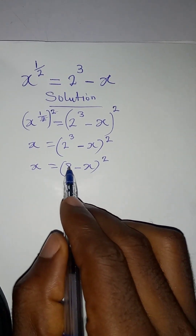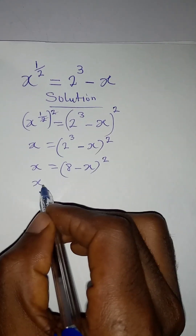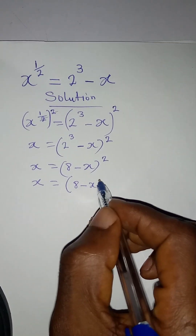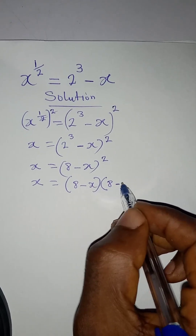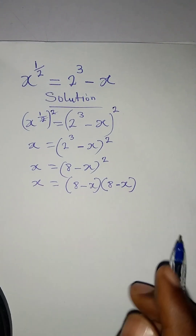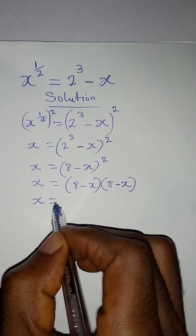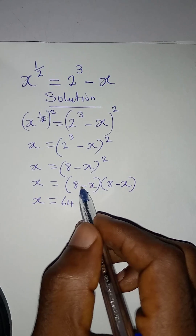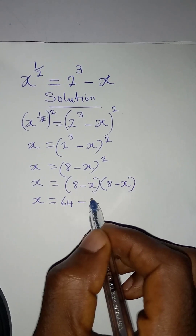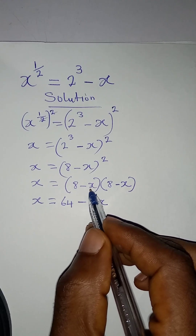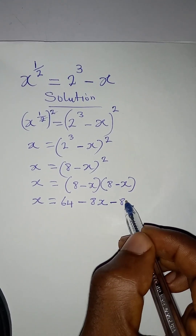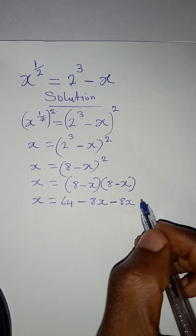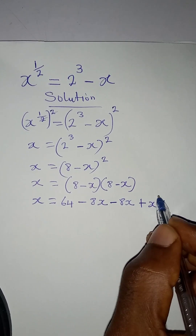The next thing is to expand this, so we have x equal to open bracket 8 minus x, multiplied by 8 minus x. So x equals 8 times 8, which is 64, then 8 times minus x is minus 8x, then minus x times 8 is minus 8x, and minus x times minus x gives positive x squared.